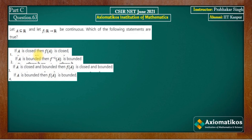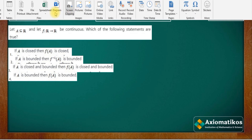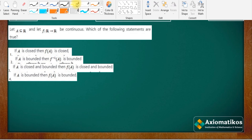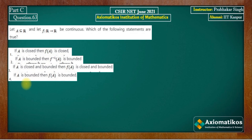If A is closed, then the image of A is also closed. You have 4 statements and the function is given as continuous, and then you have the rest of the things that you are asked about.